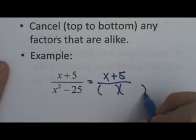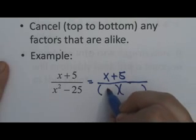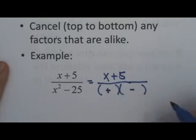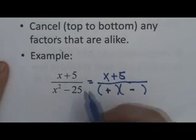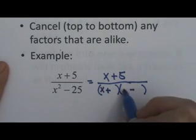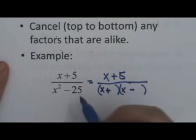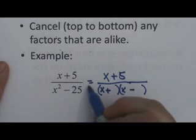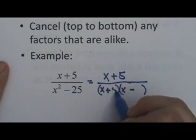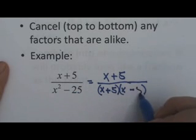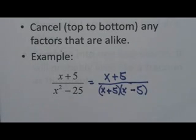We factor those with two parentheses, one with a plus, one with a minus. Take the square root of the first term, so we're going to have an x. And the square root of the second term, the square root of 25 is 5. Remember, 5 times 5 equals 25.